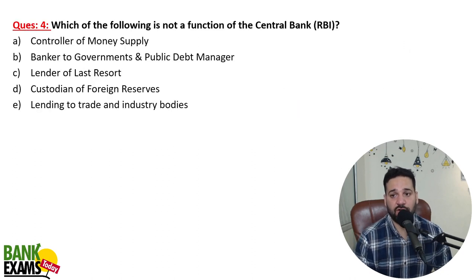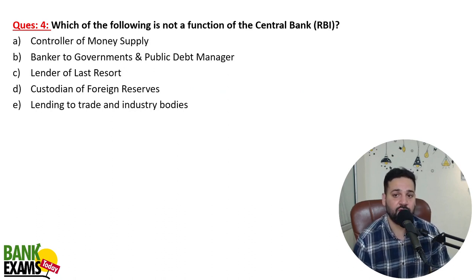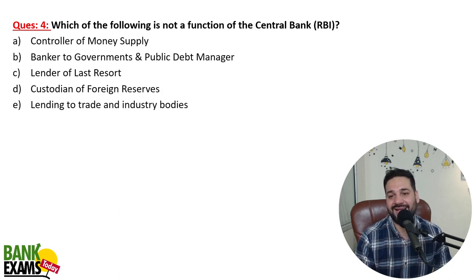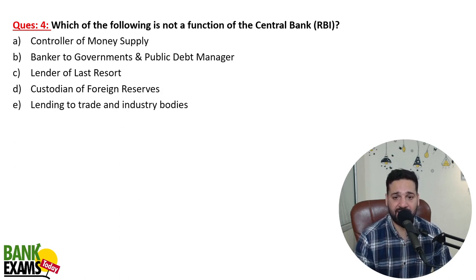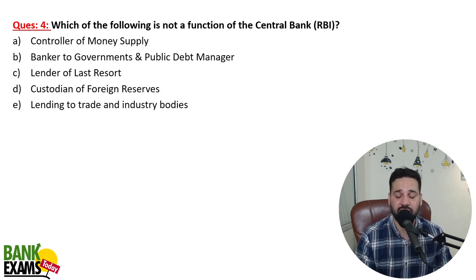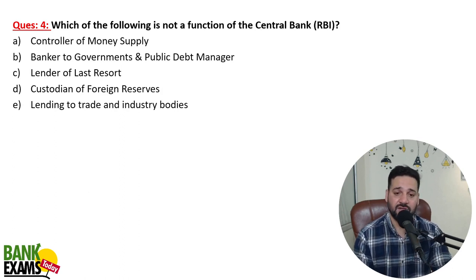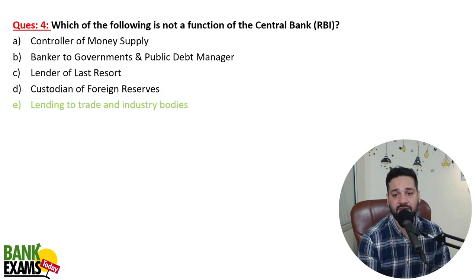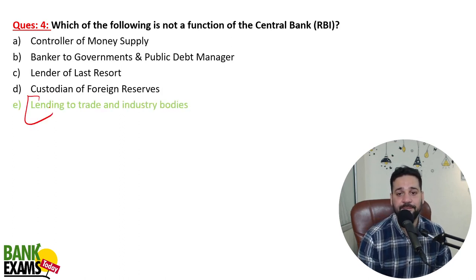Which of the following is NOT a function of a central bank? Options: controller of money supply; banker to the government and public debt manager; lender of last resort; custodian of foreign reserves; lending to trade and industrial bodies. Obviously, RBI does not do lending to trade and industrial bodies — that is not its function.